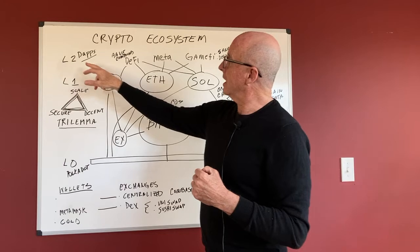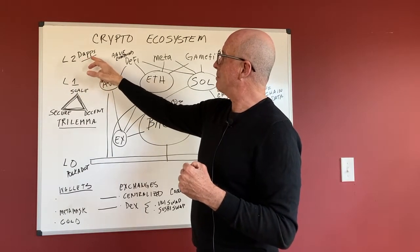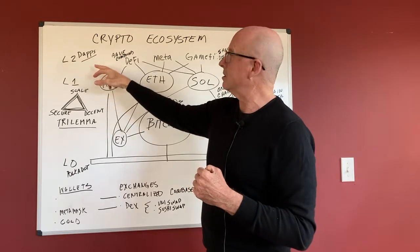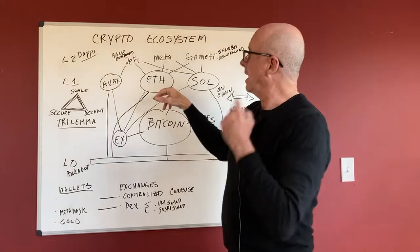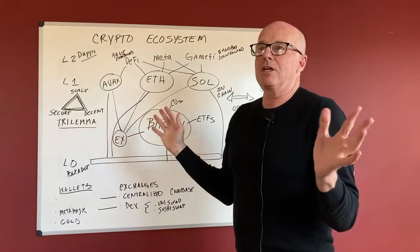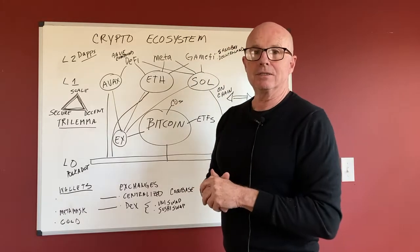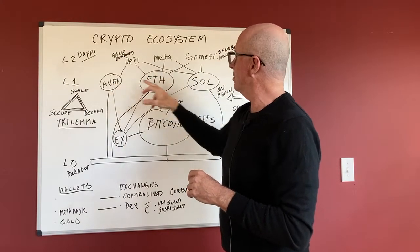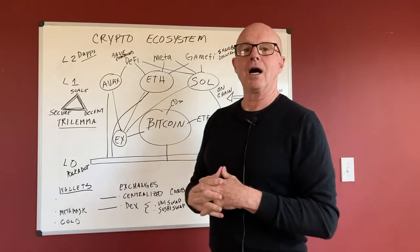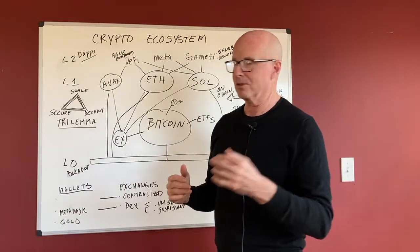So layer two is basically DAPs, they call them decentralized applications that are built on top of these layer one platforms. And last year, a year ago, two years ago, all of the decentralized applications were all being done on Ethereum. Since then, some of them are spread out to some of these other competing layer one blockchains like Avalanche and Solana, and there's a couple others.